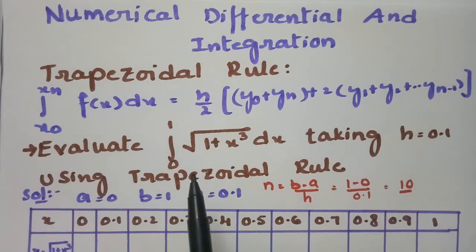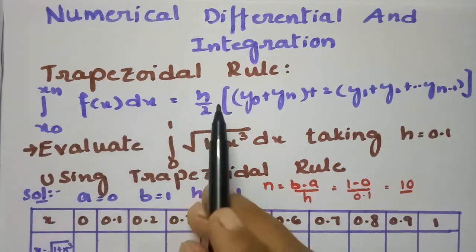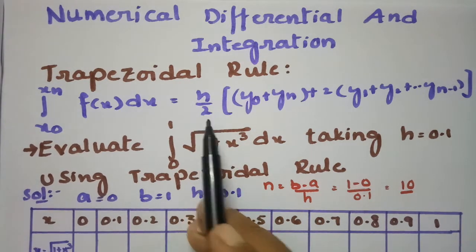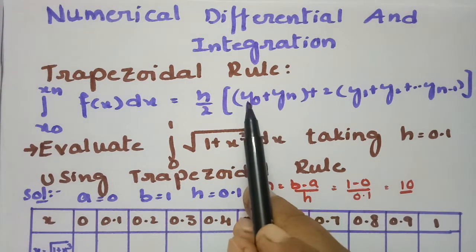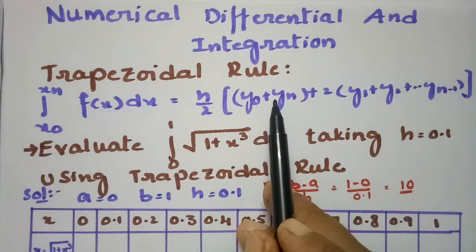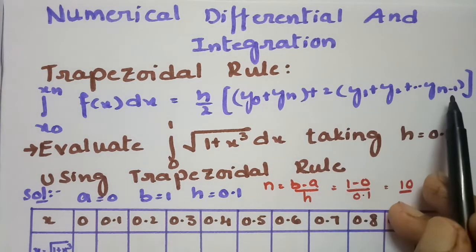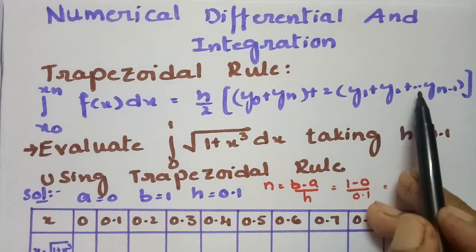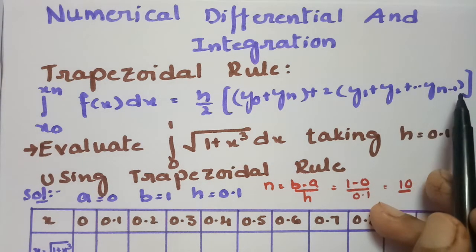According to the trapezoidal rule, the integral from x0 to xn of f(x) dx is equal to h/2 times the sum of the first and last ordinates (y0 plus yn), plus 2 times the sum of the remaining ordinates: y1 plus y2 plus y3 and so on up to yn minus 1.